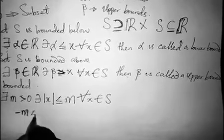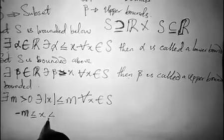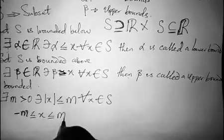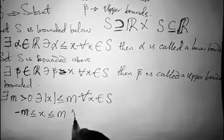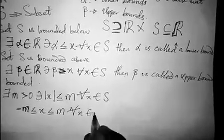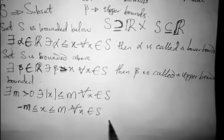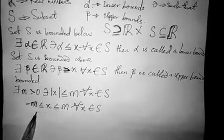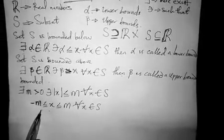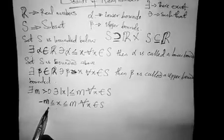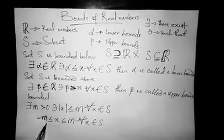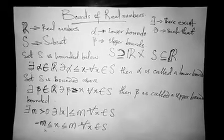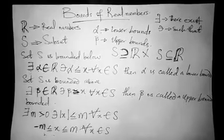Commonly it is written like this: minus M is less than or equal to x, which is less than or equal to M, for all x in S. This is when we can say a set is bounded above and bounded below.